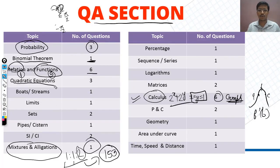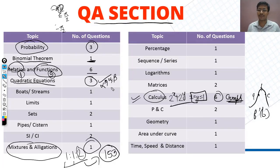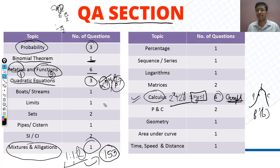Quadratic equations were at a good level. There was a question where one equation had roots alpha and beta, and we had another equation involving alpha to the power 19 and beta to the power 7. You had to find the equation with both roots. This was a good question. Both streams came in very easy.